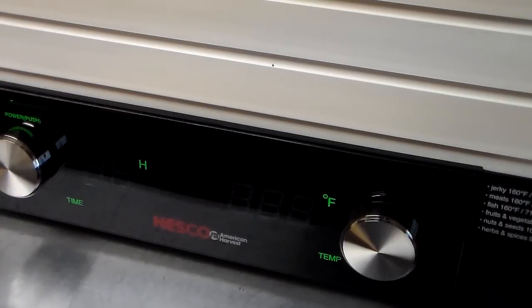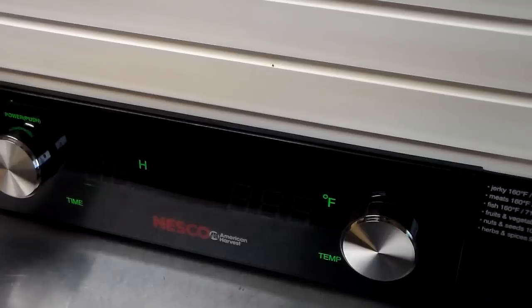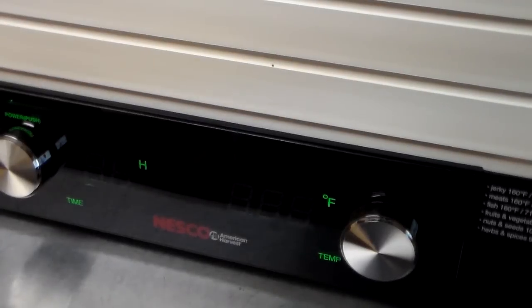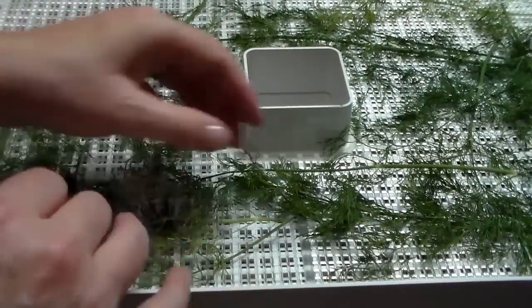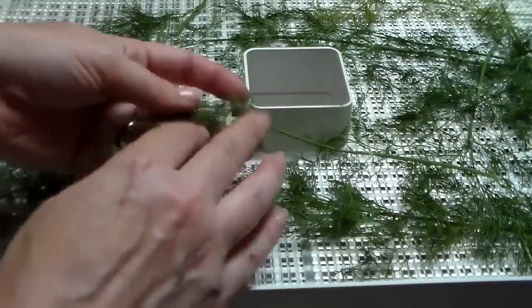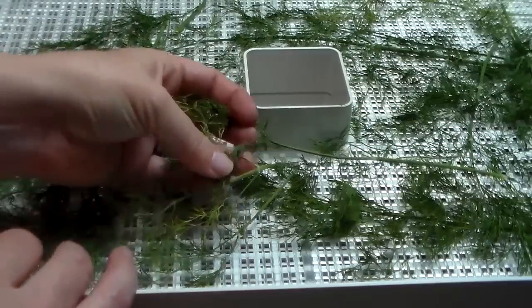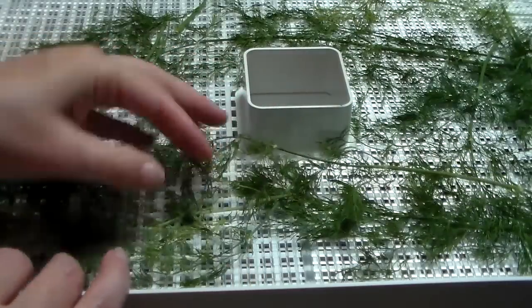The timer's gone off and the dehydrator has stopped so we're going to open the trays up and make sure that it's completely dry. What we're checking for is to make sure that it's dry. As you can see it's still a nice green but it is completely dry and able to break apart.